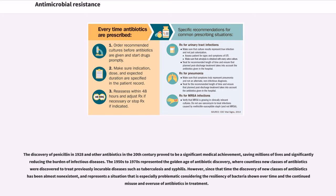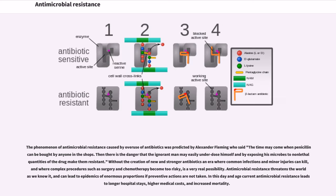The discovery of penicillin in 1928 and other antibiotics in the 20th century proved to be a significant medical achievement, saving millions of lives and significantly reducing the burden of infectious diseases. The 1950s to 1970s represented the golden age of antibiotic discovery, where countless new classes of antibiotics were discovered to treat previously incurable diseases such as tuberculosis and syphilis. However, since that time the discovery of new classes of antibiotics has been almost non-existent. The phenomenon of antimicrobial resistance caused by overuse of antibiotics was predicted by Alexander Fleming who said the time may come when penicillin can be bought by anyone in the shops, and that the ignorant man may easily underdose himself and by exposing his microbes to non-lethal quantities of the drug make them resistant.